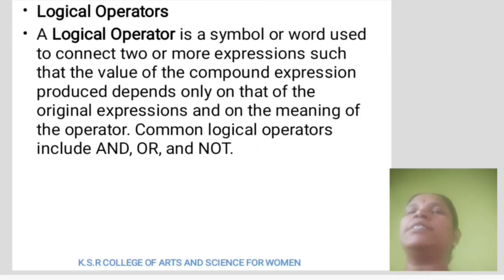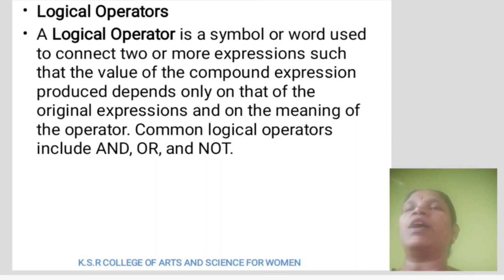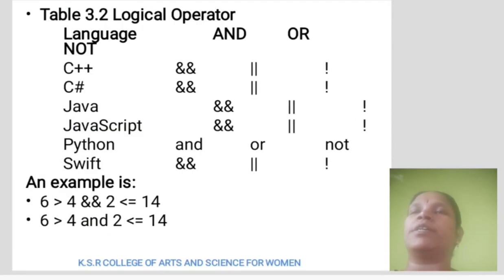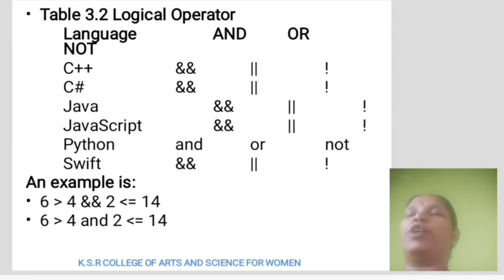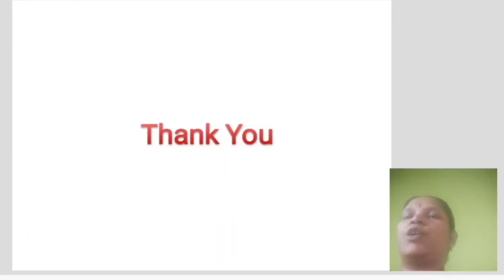Logical operators are symbols or words used to connect two or more expressions such that the resulting value depends only on the original expressions and the meaning of the operator. Common logical operators include and, or, and not. For example: 6 greater than 4 and 2 less than or equal to 14. Thank you.